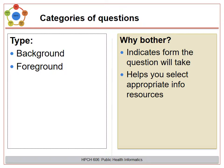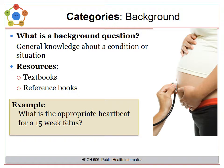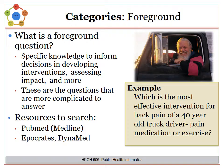We're going to look at background and foreground questions. A background question requires some general knowledge about a condition or a situation; resources that could answer these kinds of questions tend to be textbooks and reference books. For example: what is the appropriate heartbeat for a 15-week fetus? Foreground questions, on the other hand, are those more specific questions that can be answered by looking into the literature. For example: which is the most effective intervention for back pain of a 40-year-old truck driver — pain medication or exercise? In this question, the population and interventions to be studied are very specific. The best places to search would be databases such as PubMed.